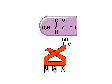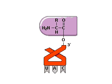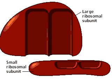Enzymes called aminoacyl synthetases bind the COOH end of the amino acid to the three prime OH of the tRNA. Protein synthesis occurs on ribosomes that are composed of a small subunit and a large subunit. These subunits are made of ribosomal RNA and several proteins.